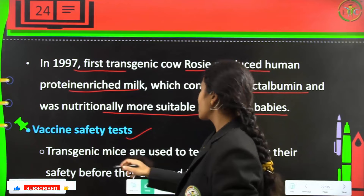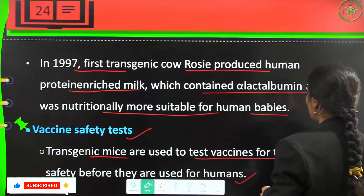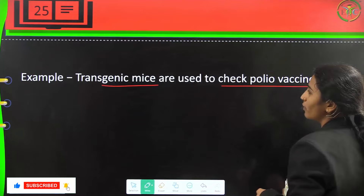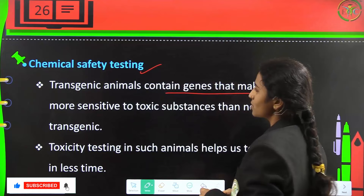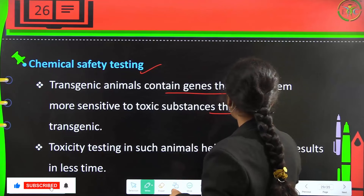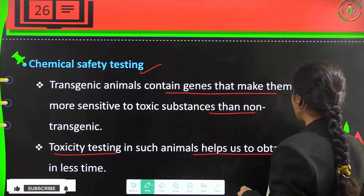For vaccine safety tests, transgenic mice are used to test vaccines for safety before they are used on humans — for example, checking polio vaccines. For chemical safety testing, transgenic animals contain genes which make them more sensitive to toxic substances than non-transgenic animals, so toxicity testing in such animals gives better results in less time.